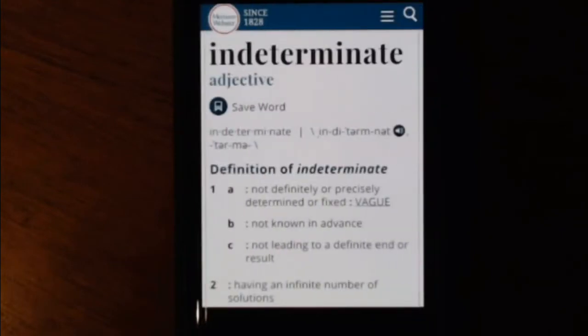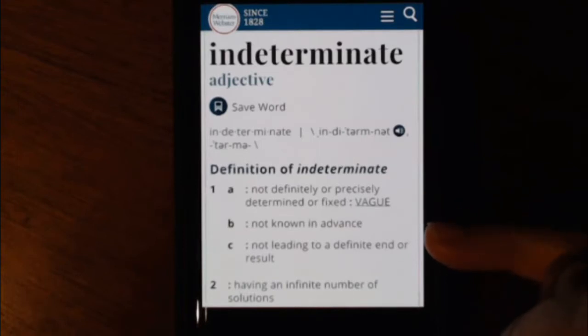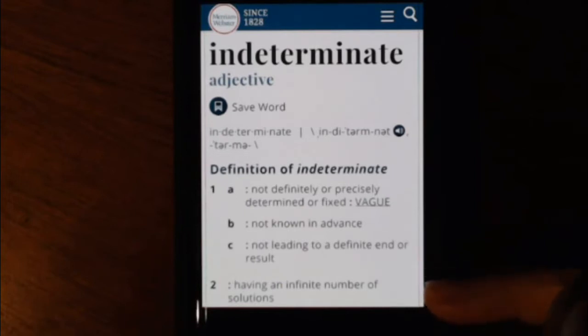The second definition we're going to look at is indeterminate. Now indeterminate means not definitely or precisely determined or fixed, vague, not known in advance. Not leading to a definite end or result. So C and number two make the most sense mathematically. Number two says having an infinite number of solutions.